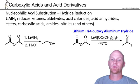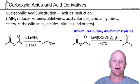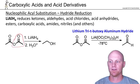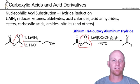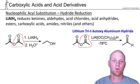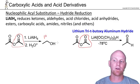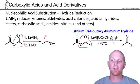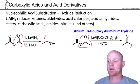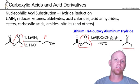Acid anhydrides work exactly the same way as acid chlorides. The only difference is you have a different leaving group — a large carboxylate — which is not as good a leaving group, so anhydrides are less reactive. But the reactivity ends up being the same with our reagents. With lithium aluminum hydride you go all the way to a primary alcohol, and with lithium tri-t-butoxy aluminum hydride you get the aldehyde instead — exactly the same as we saw with acid chlorides.